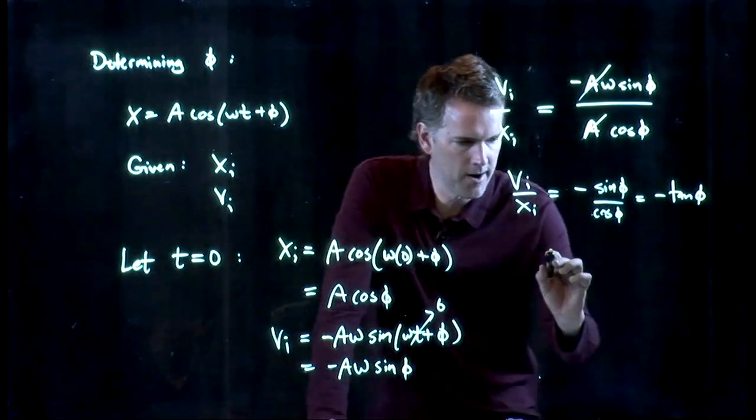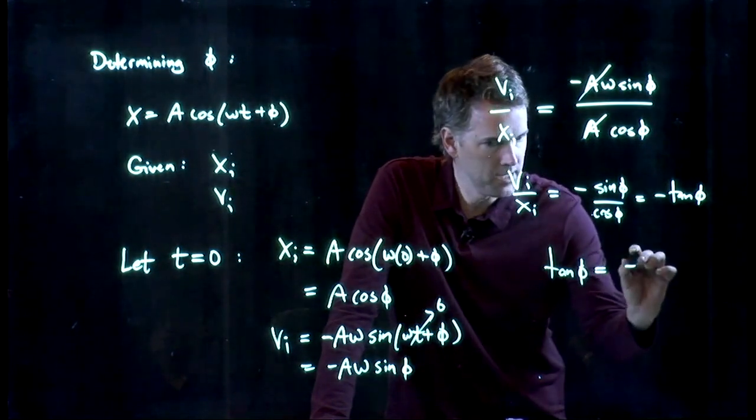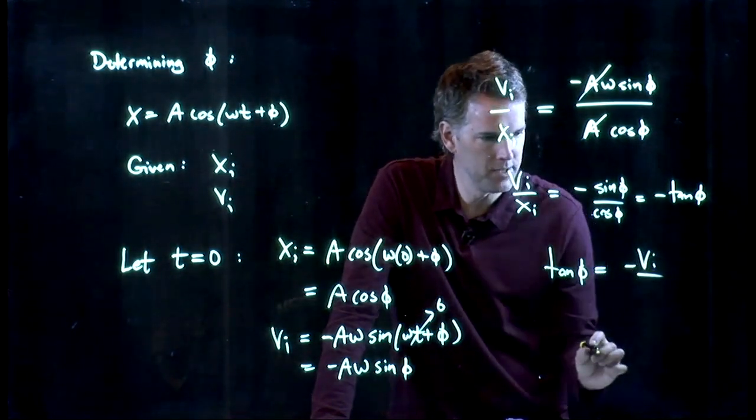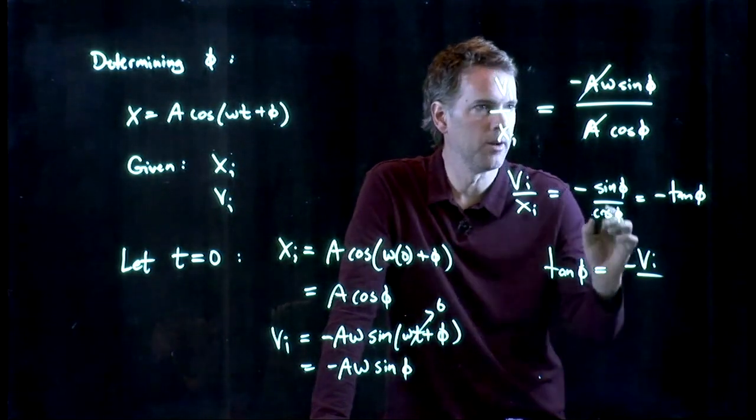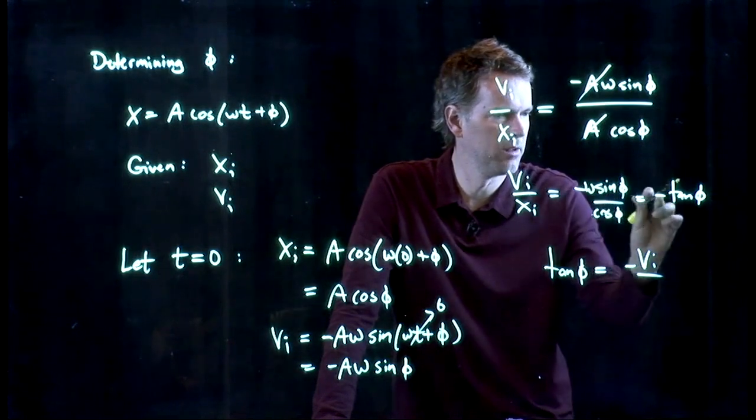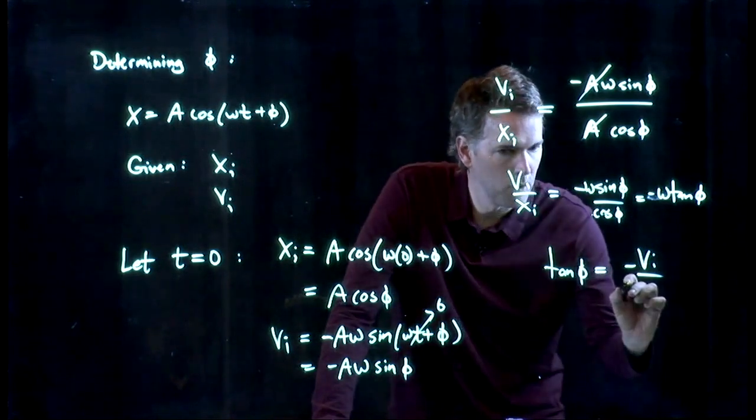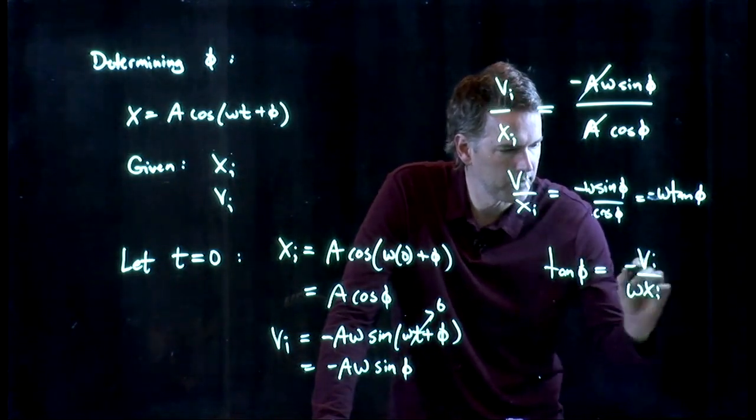But sine over cosine is tangent of phi. And so there's this very nice way to determine phi. You write tangent of phi is negative vi over, and we forgot something here. We had an omega sitting right there. Let's get that back in. Negative vi over omega times xi.